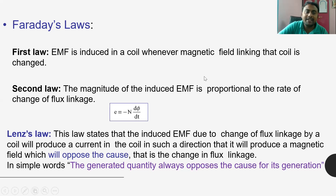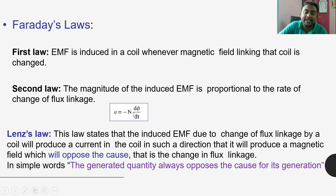Faraday's second law states that the amount of emf is directly proportional to the rate of change of flux linkage. If N is the number of turns in a coil, the amount of emf is directly proportional to N·dΦ/dt. The negative sign comes because of Lenz's law, which states that the generated quantity always opposes the cause for its generation. The generated quantity is emf, and the cause is flux, so emf always opposes the flux — hence the negative sign.